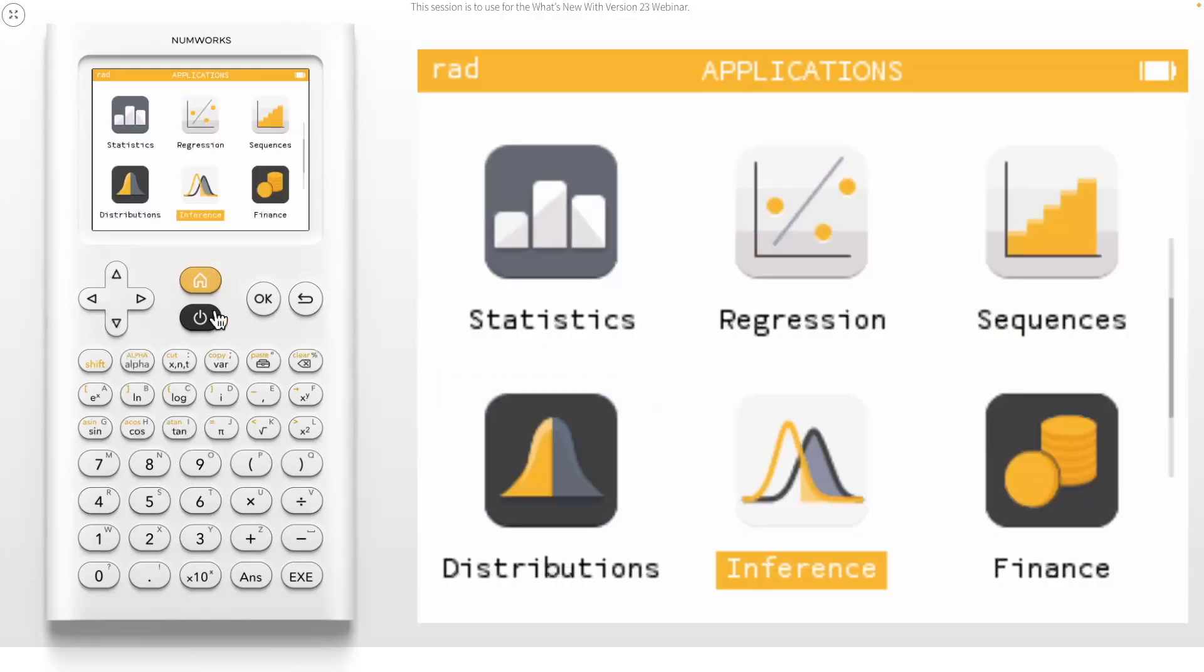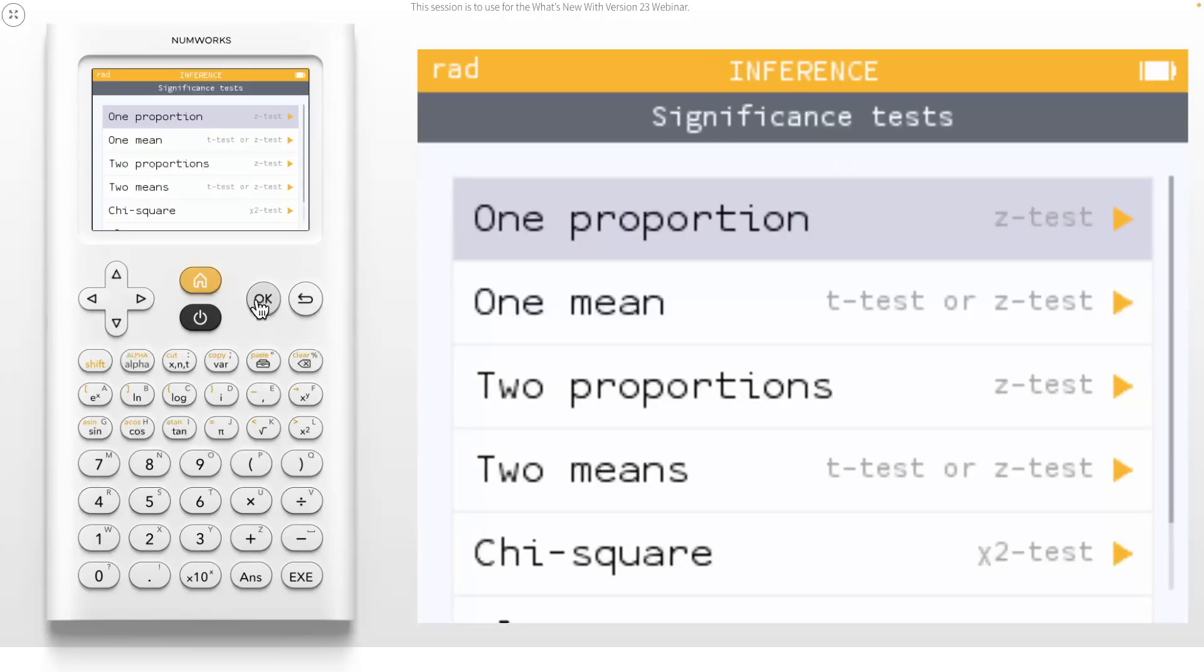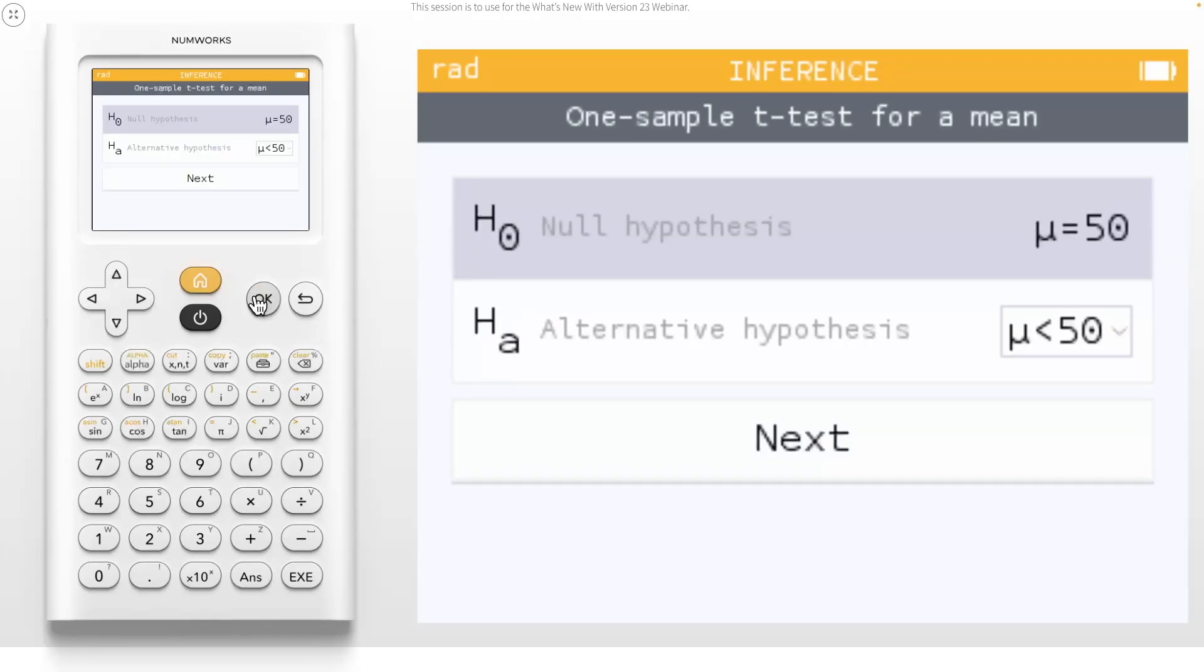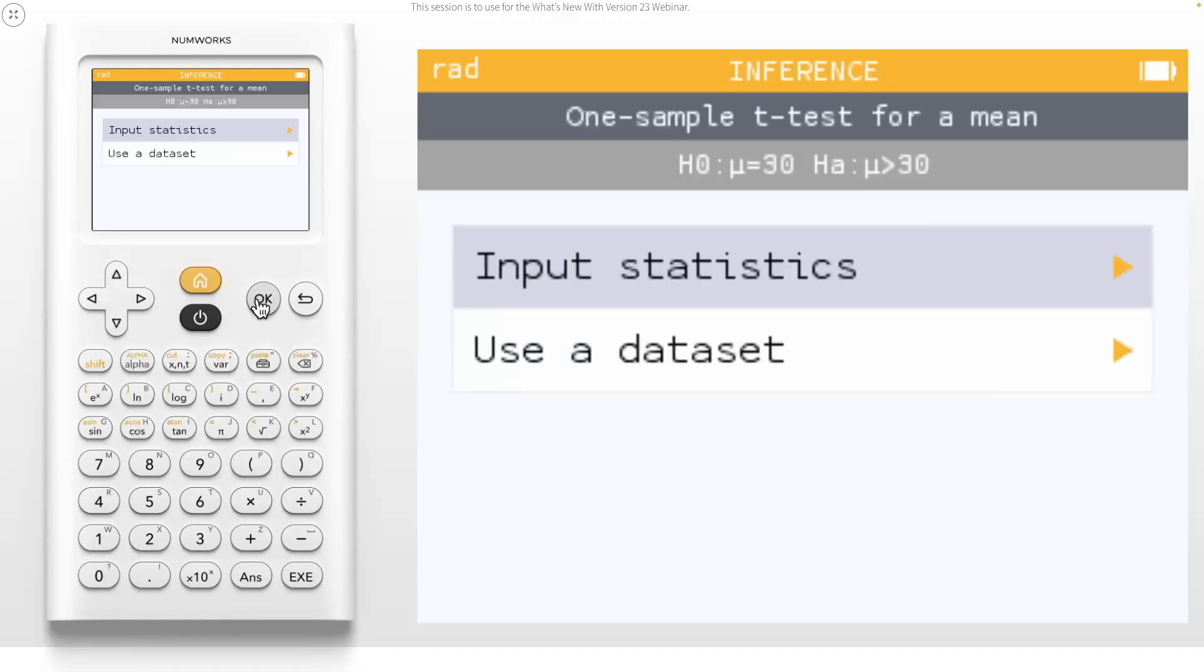For example, let's navigate over to the Inference application and select Tests. We'll perform a one-sample t-test for a mean on the data stored in V1N1 from the statistics application. Let's assume our null hypothesis is 30 and the alternative hypothesis is mu is greater than 30. When I click on Next, notice the new screen here. You can now choose whether to input the summary statistics or to use a data set.